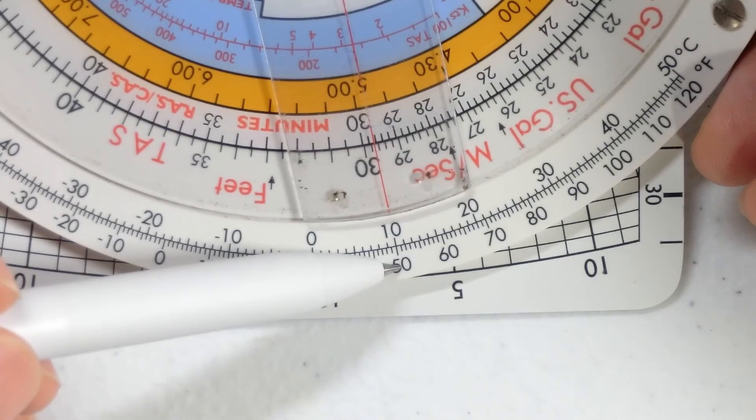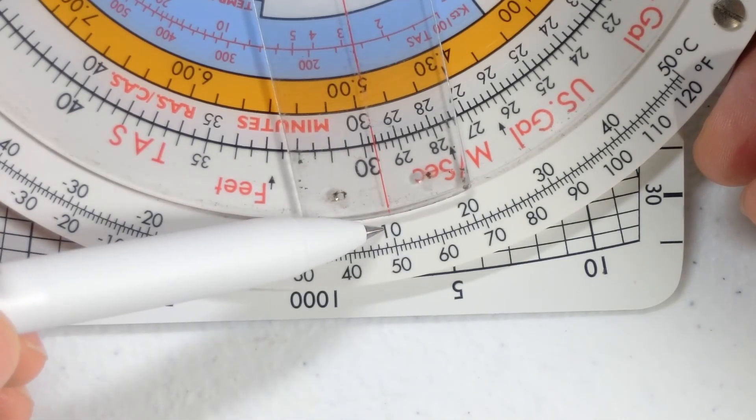So 50 degrees Fahrenheit would be 273 plus 10 degrees, 283 degrees Kelvin.